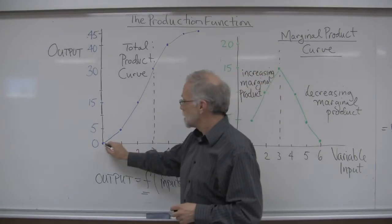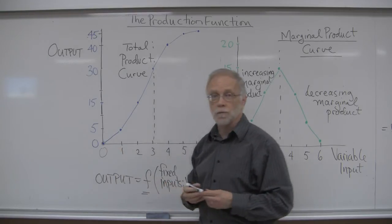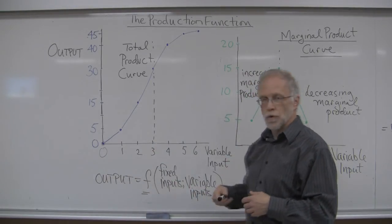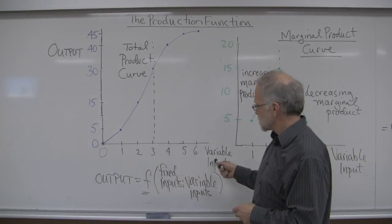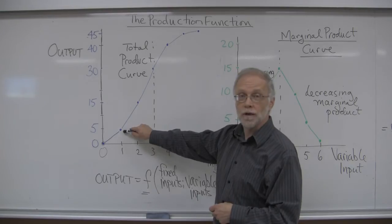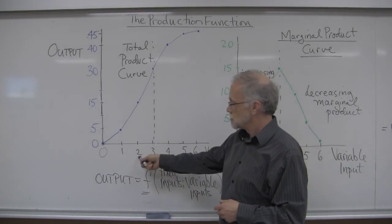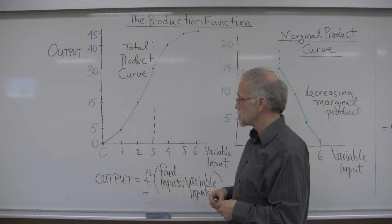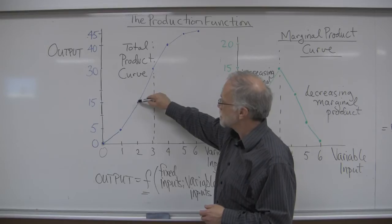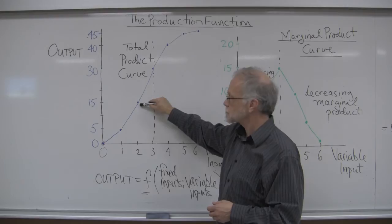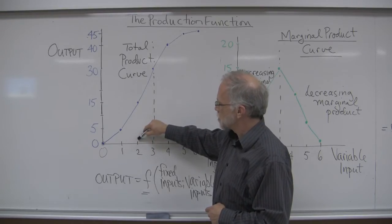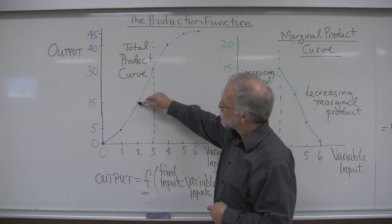What's the story about the relationship between variable inputs and what gets produced? If we start with zero variable inputs — say we don't have anybody to work in the fields — then we're going to get zero output. But if we send one person with some tools out into the field, that's one unit of the variable input, and that person produces something. With two people, I'm assuming the total output is 15. So the first person produced five units of output, and adding a second person brought output to 15.